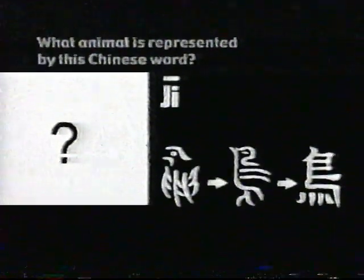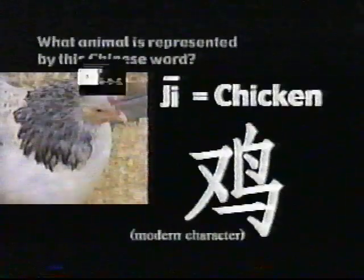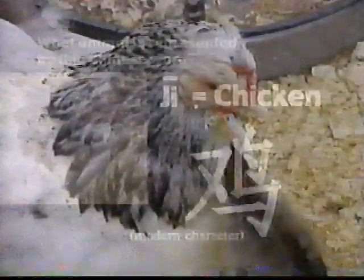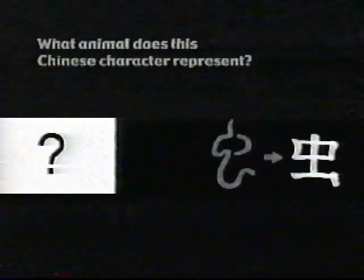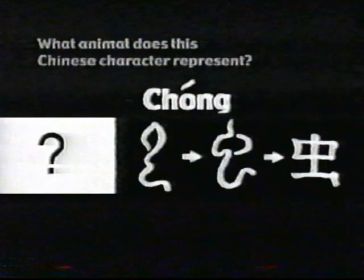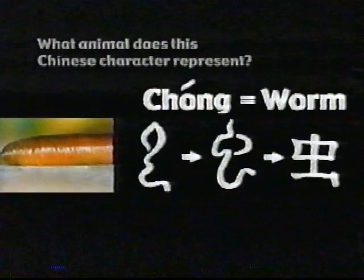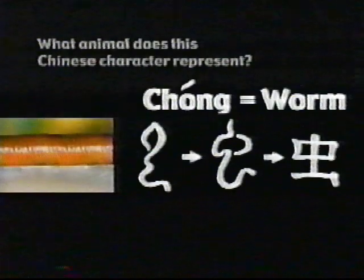What animal is represented by this Chinese word? Ji. The main part of the character looks like this. Ji — the rooster says ji. The Chinese word for chicken is ji. What animal does this Chinese character represent? Chong. Worm. Not all Chinese animal names sound like the animals' calls, and not every character for animal names looks like the animals themselves.